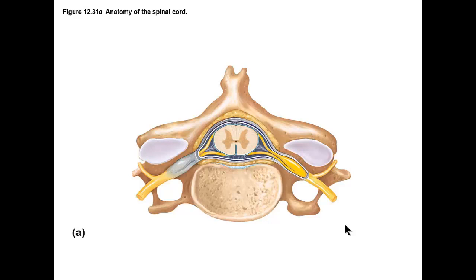To do that, we want to review the anatomy of the spinal cord, which is good timing since we talked about this in lab. Looking at the yellow structure in the diagram: out here, it's one complete structure — we just call it a spinal nerve. How many pairs do we have? 31 pairs. So we have 31 pairs of spinal nerves.